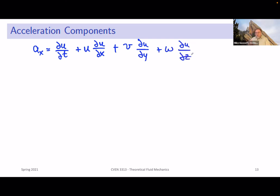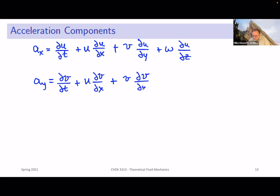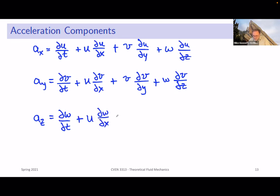We can break down the acceleration in the x direction as: a_x = del u/del t + u(del u/del x) + v(del u/del y) + w(del u/del z). The y component: a_y = del v/del t + u(del v/del x) + v(del v/del y) + w(del v/del z). And the z component: a_z = del w/del t + u(del w/del x) + v(del w/del y) + w(del w/del z).